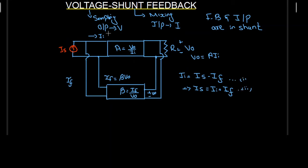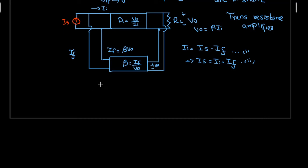This is the whole circuit of the voltage shunt feedback configuration, and this circuit is also called a trans-resistance amplifier. We have voltage divided by current, which is actually resistance — hence trans-resistance amplifier. So the voltage shunt feedback amplifier is also called a trans-resistance amplifier circuit. Now the gain of this amplifier without feedback is A equal to V0 divided by II, and the gain with feedback is AF equal to V0 divided by IS.